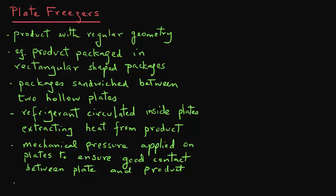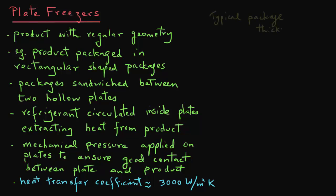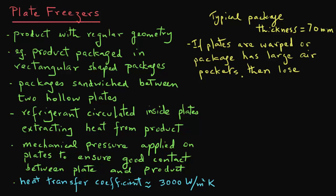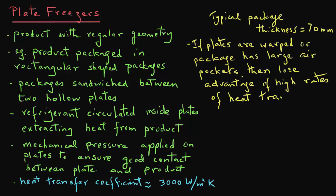In this type of freezer, because of the excellent contact between the plate and the product, we get high heat transfer coefficients around 3,000 watts per square meter Kelvin. The package must be thin, and a typical package thickness is usually less than 70 millimeters or 7 centimeters. If the plates are warped or if the package has got large air pockets, then one loses the advantage of high rates of heat transfer.